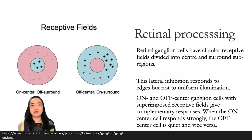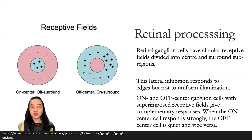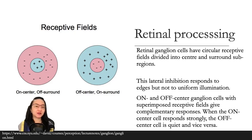Retinal processing. Retinal ganglion cells have circular receptive fields divided into center and surround sub-regions. This lateral inhibition responds to edges but not to uniform illumination. On and off center ganglion cells with superimposed receptive fields give complementary responses. When the on-center cell responds strongly, the off-center cell is quiet, and vice versa. On the picture you can see the on-center off-surround and off-center on-surround receptive fields.